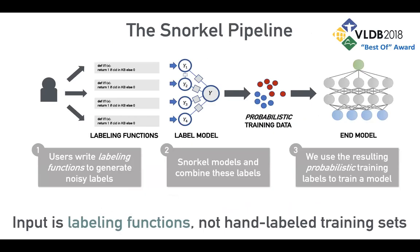Going into the individual steps of the Snorkel pipeline: first, users write labeling functions which assign noisy labels to your training data. This is exactly the type of rules we saw with the email classification task — they can look for specific words, patterns, bad grammar, misspellings, sentiment, really any signal we can get from the data.